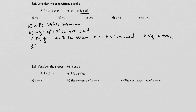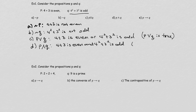What about D — they're asking for P and Q? That is '4 plus 3 is even, and 4 squared plus 3 squared is odd.' Even one statement being false means the conjunction is false. Since the first statement is false, this 'and' statement is also false.